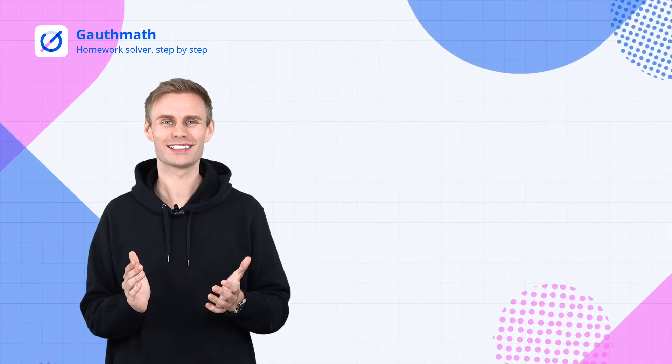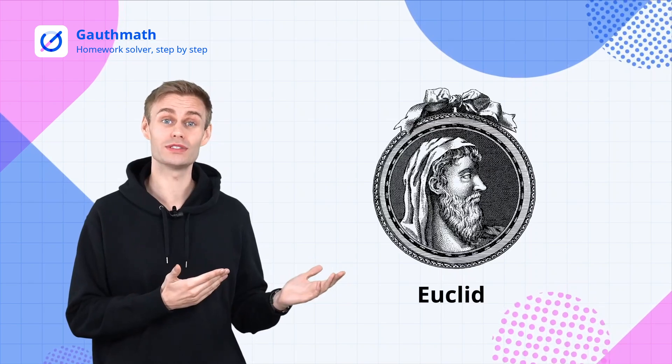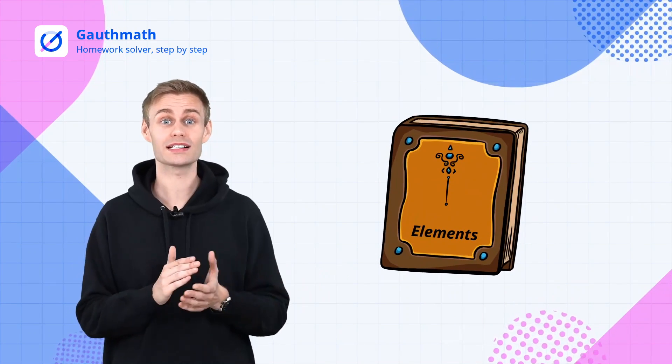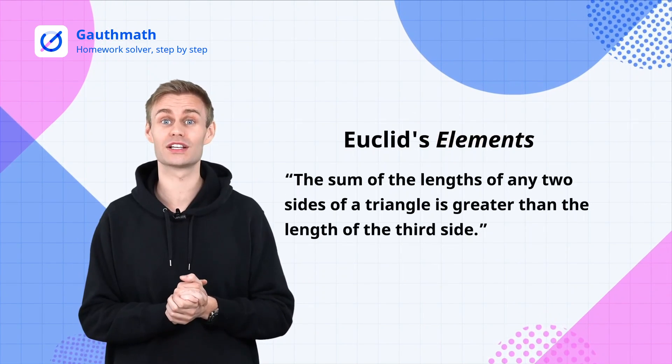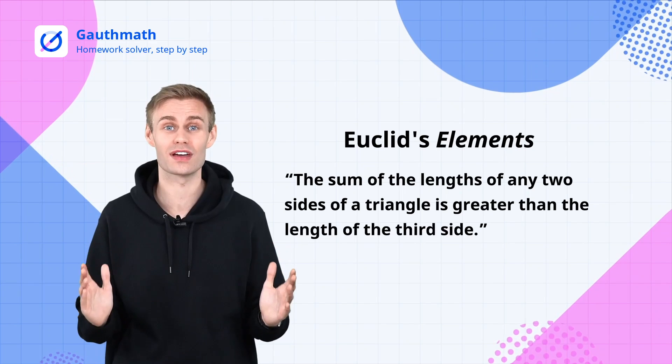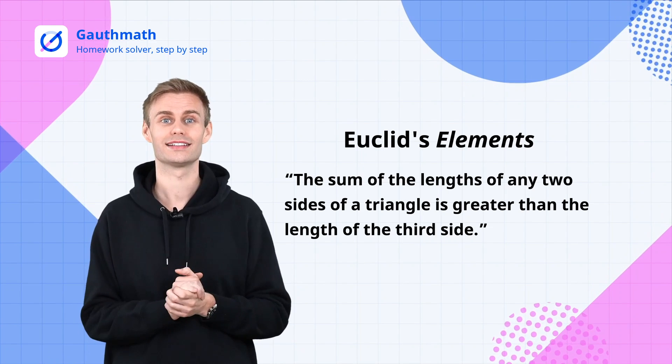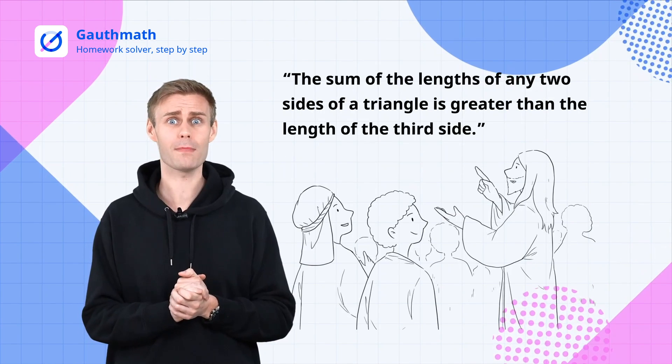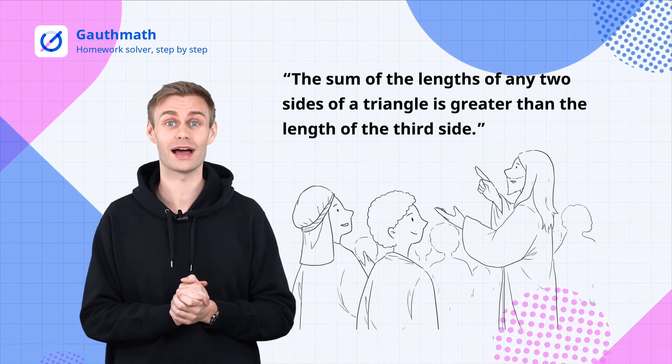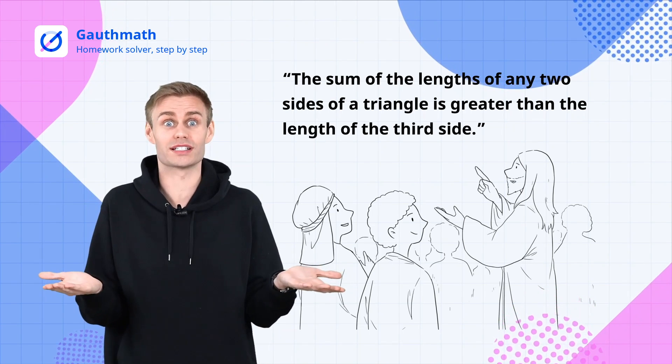Two thousand years ago, mathematician Euclid wrote in Euclid's Elements that the sum of the lengths of any two sides of a triangle is greater than the length of the third side. This great discovery was mocked by the other mathematicians at the time. They believed this triangle constraint was useless.